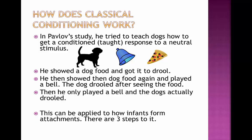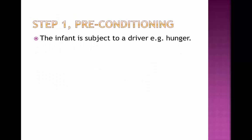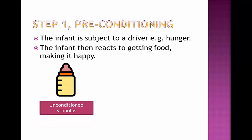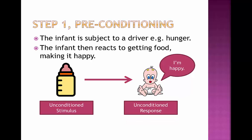This can be applied to how infants form attachments with their caregivers, and there are three steps to it. The first is step one: preconditioning. Here the infant is subject to a driver — for example, hunger. The infant reacts to getting food, which will then make it happy. So we have an unconditioned stimulus, which is a stimulus that suppresses the driver — in this case hunger. If we give the unconditioned stimulus, we then get an unconditioned response, which makes the baby happy.